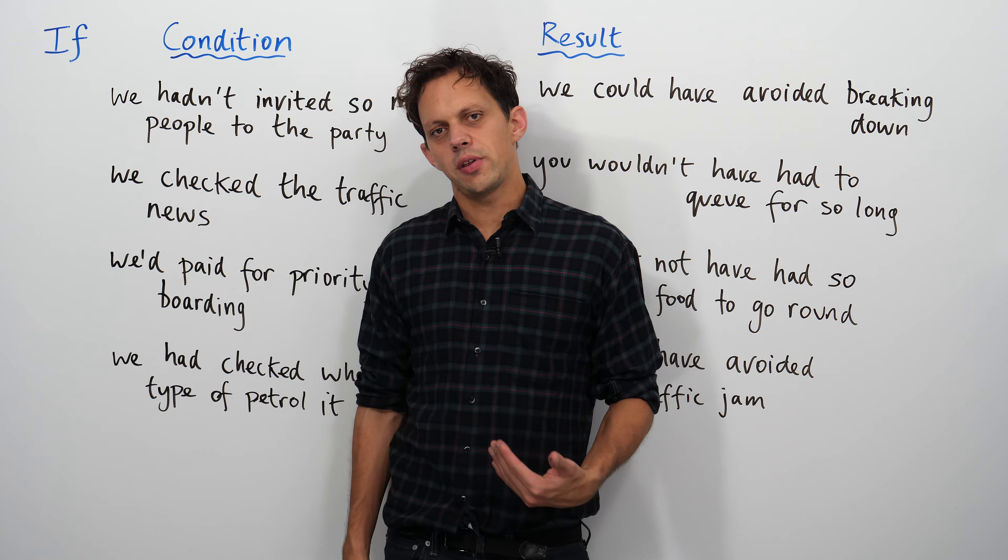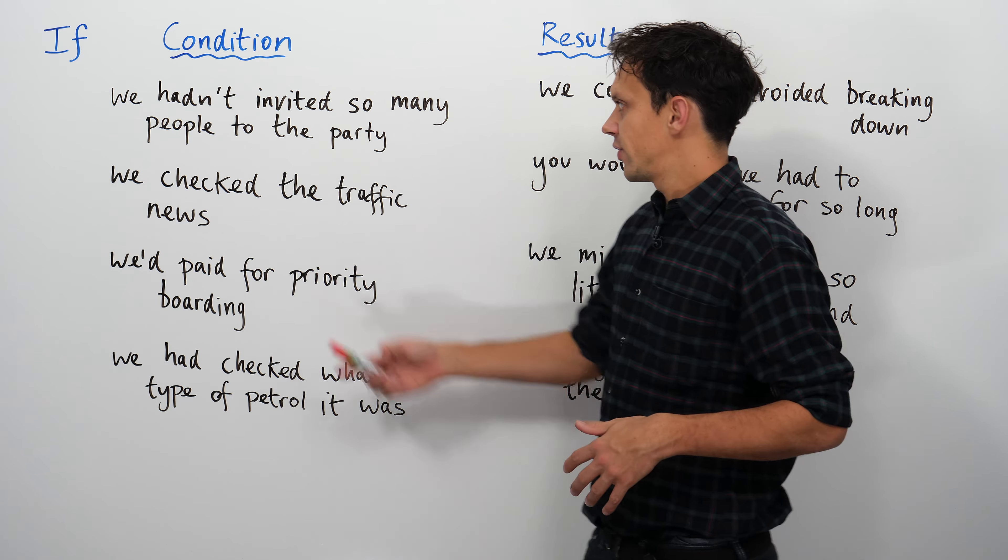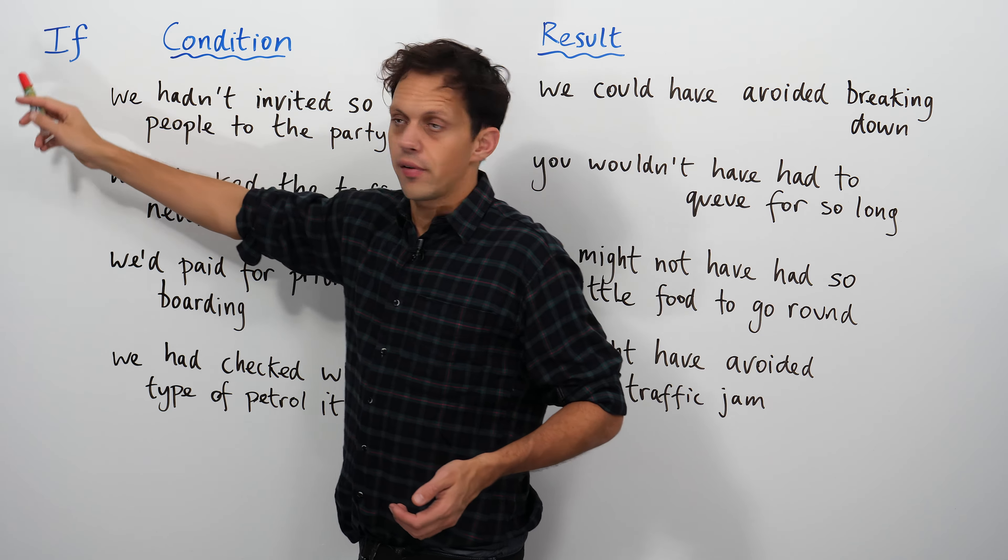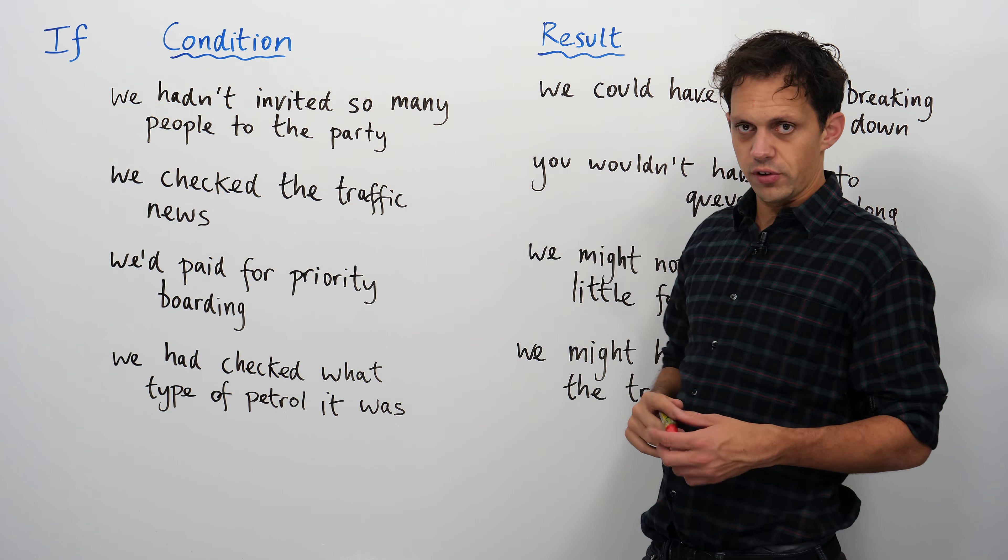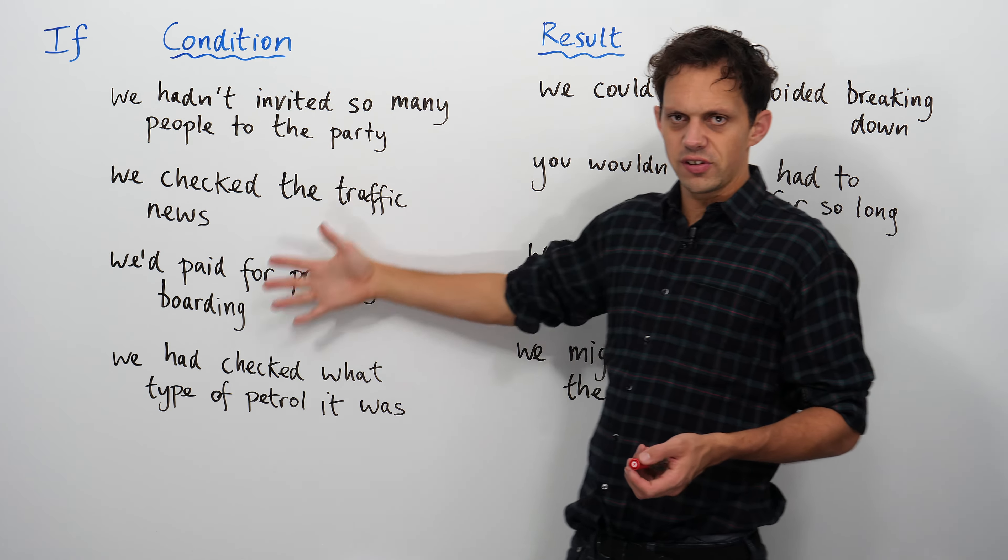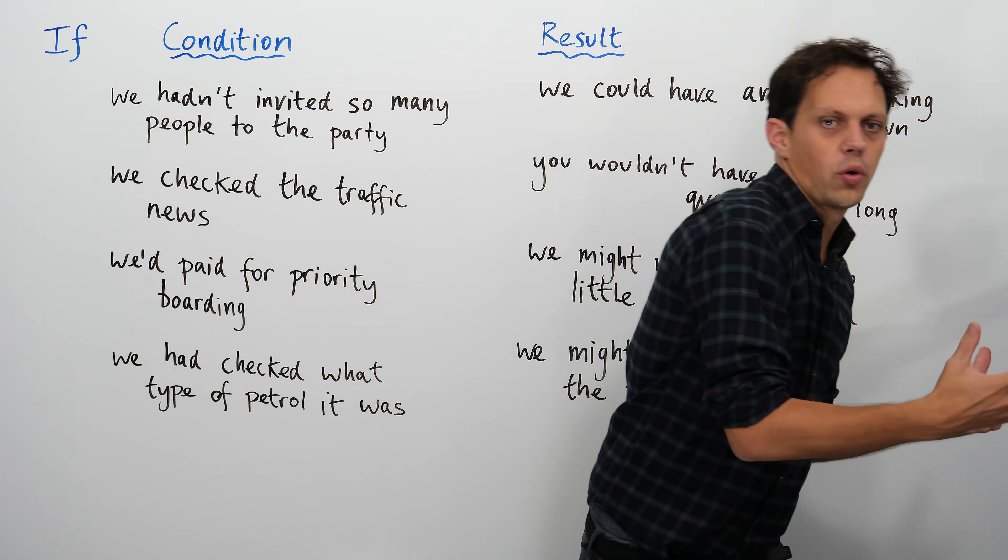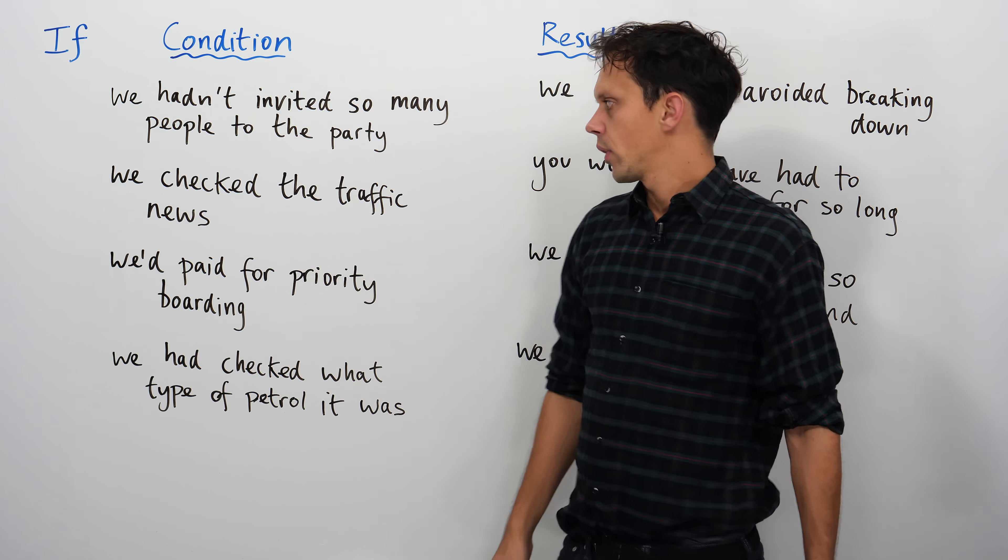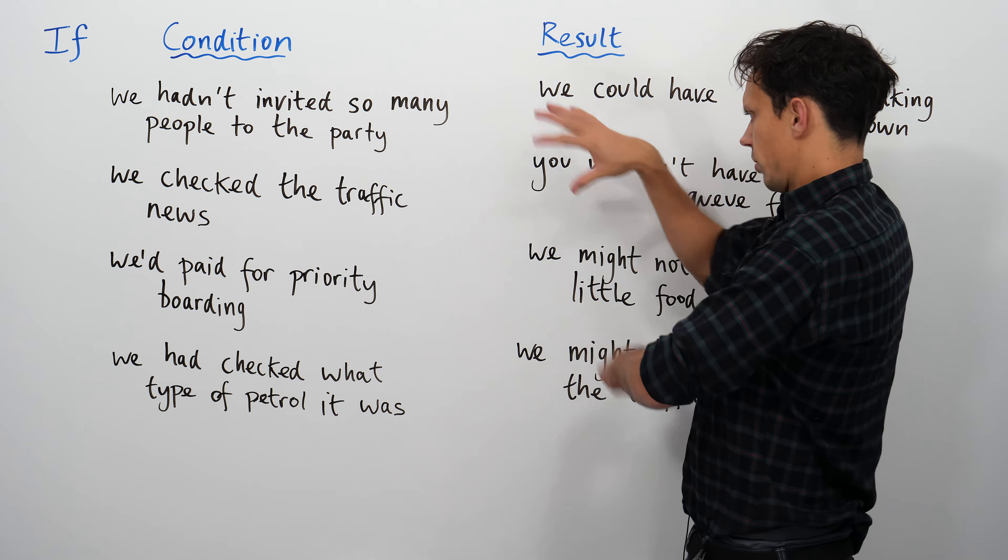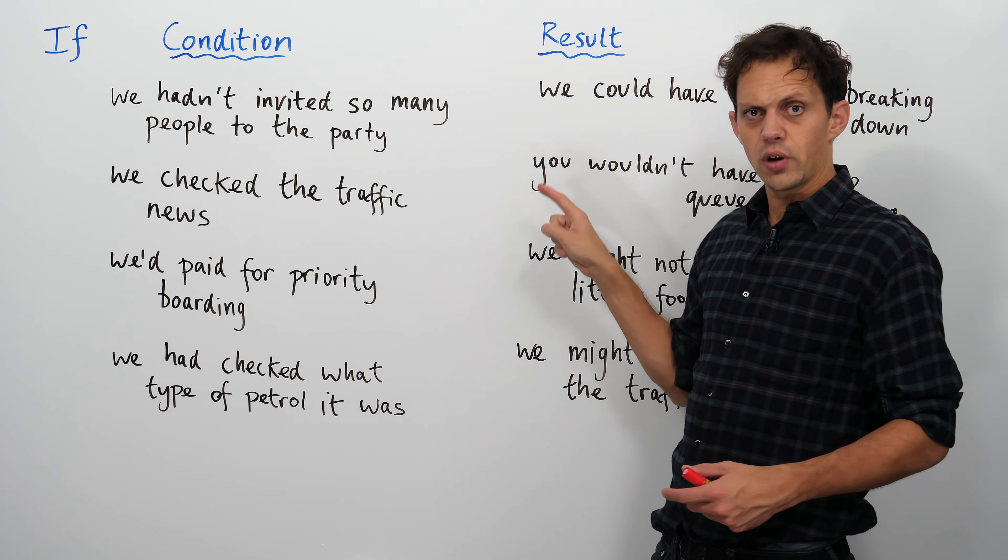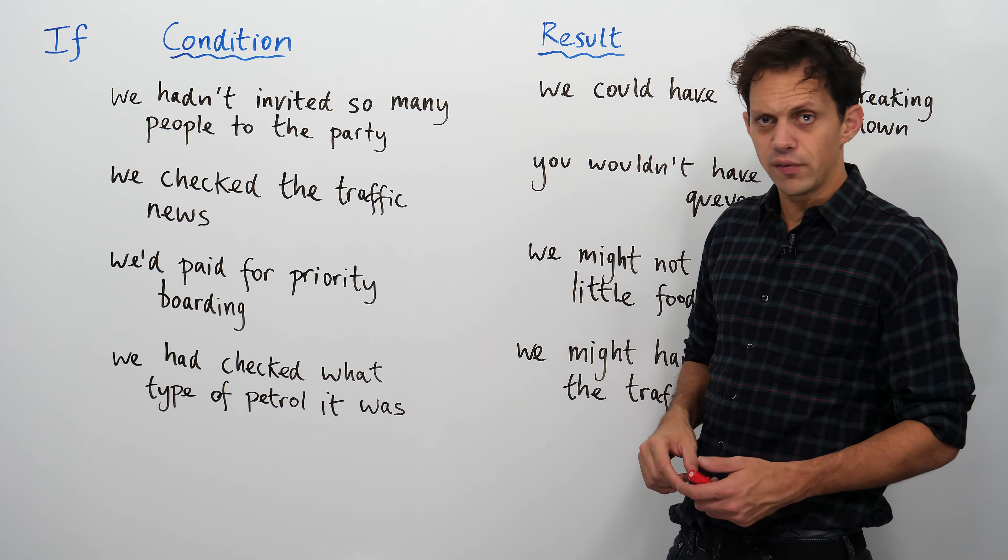Another way of thinking about the structure of the third conditional is we always start with the if and then condition leading to a result. So if such and such a thing hadn't happened, what would have been created? I've got one, two, three, four sentences, and I've jumbled them around, so we can try and put them back together again. A bit like Humpty Dumpty falling off the wall.